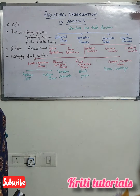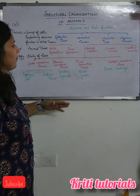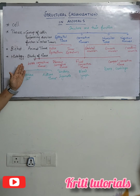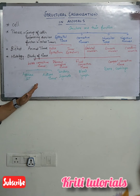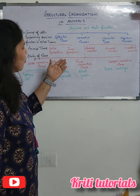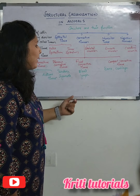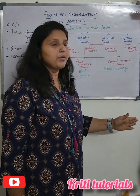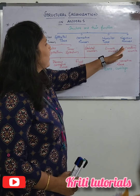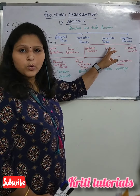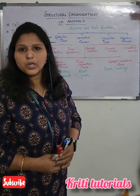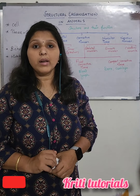Epithelial tissues are divided into outer epithelium and inner epithelium. Connective tissues are divided into four types: loose connective tissue — further branched into areolar connective tissue and adipose tissue; fibrous connective tissue — seen in tendons and ligaments; fluid connective tissue — seen in blood and lymph; and compact connective tissue — seen in bone and cartilage. Muscular tissues are classified into skeletal muscles, smooth muscles, and cardiac muscle. Nervous tissues help conduct impulses in our body.